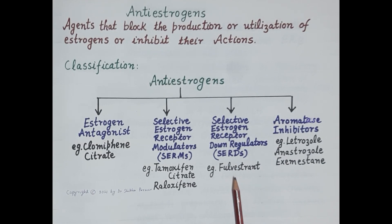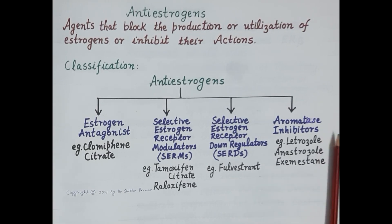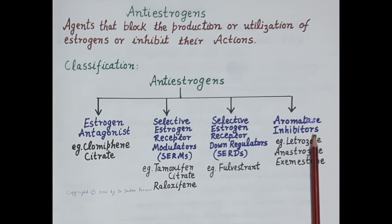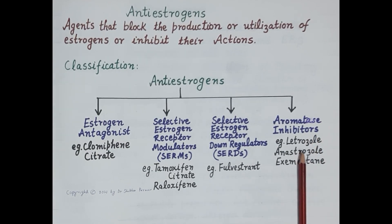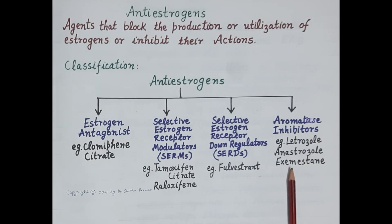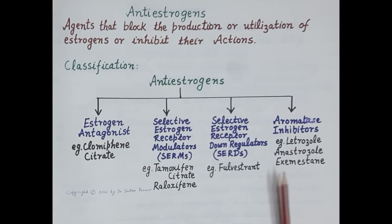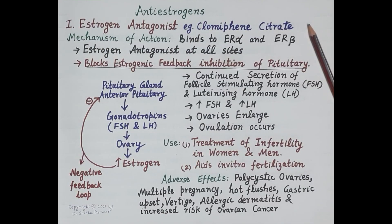For example, fulvestrant causes degradation of estrogen receptors and is used in the treatment of estrogen receptor-positive breast cancer in postmenopausal women resistant to tamoxifen. The fourth category are aromatase inhibitors, which inhibit conversion of androgens to estrogen — for example, letrozole, anastrozole, and exemestane. These drugs are used in the management of breast cancer.